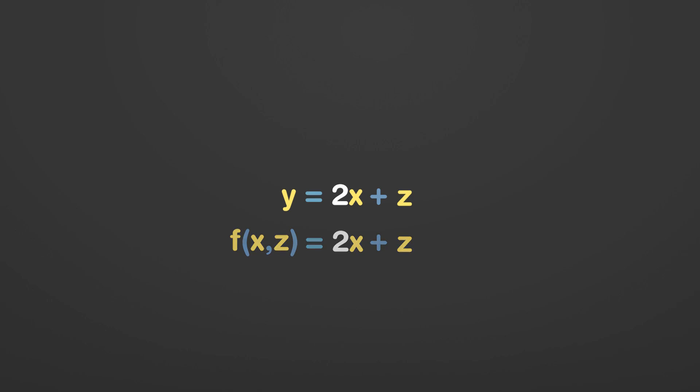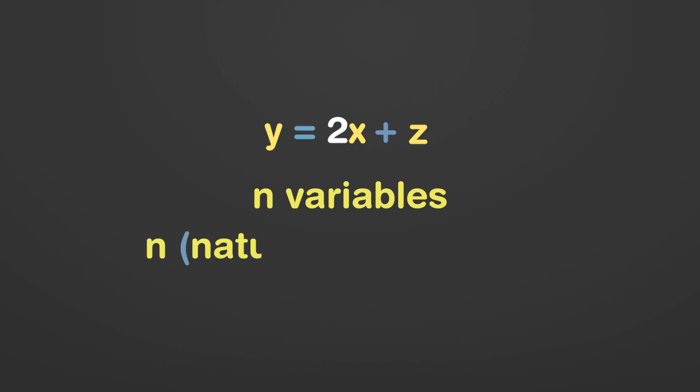Before the equation y equals 2x plus z, we have seen all function with just two variables x and y. But this is not necessarily the case every time. The function can have n number of variables, and n can be any natural number equal to or greater than 2.